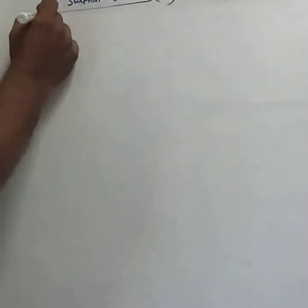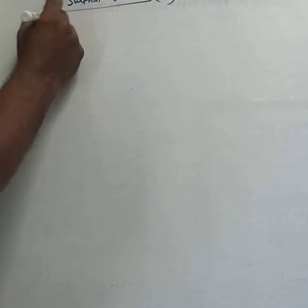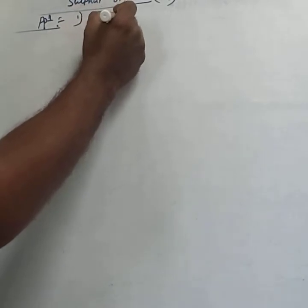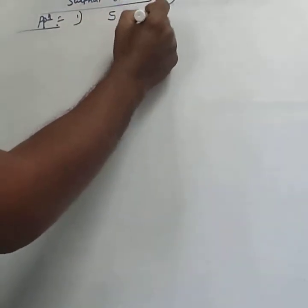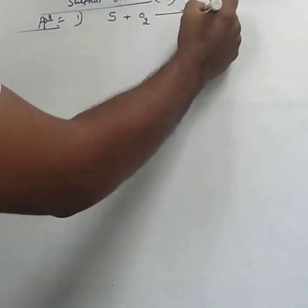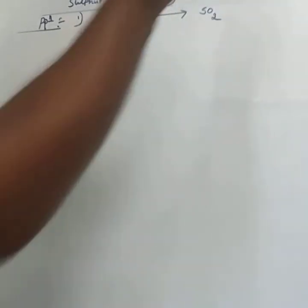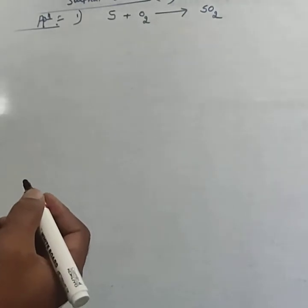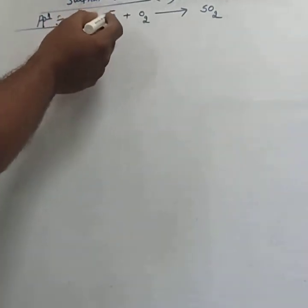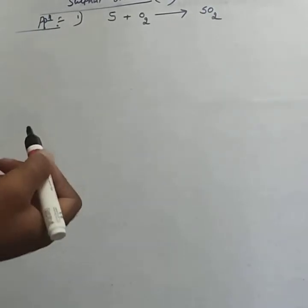First we consider the preparation of sulfur dioxide. The first method is by burning elemental sulfur in the presence of excess of air, which forms sulfur dioxide.